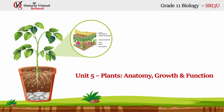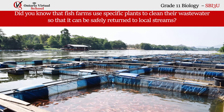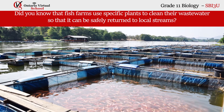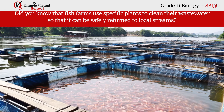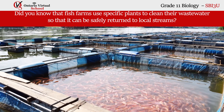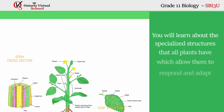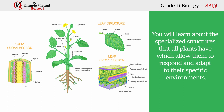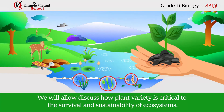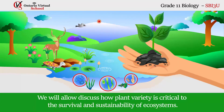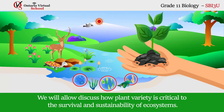Did you know that fish farms use specific plants to clean their wastewater so that it can be safely returned to local streams? In this unit, you will learn about the specialized structures that all plants have which allow them to respond and adapt to their specific environments. We will then discuss how plant variety is critical to the survival and sustainability of ecosystems.